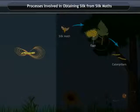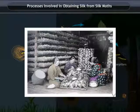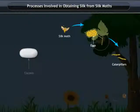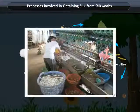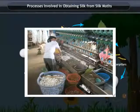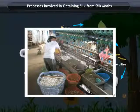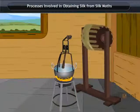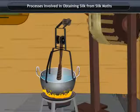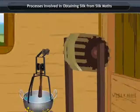These cocoons are then collected by farmers and processed to form silk fibers. Cocoons are collected and kept exposed to the sun, or steam, or boiled for separating out the silk fibers. The process by which silk thread is separated from the cocoon is called reeling the silk.